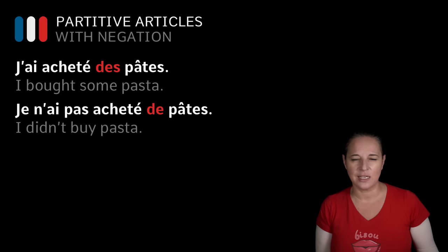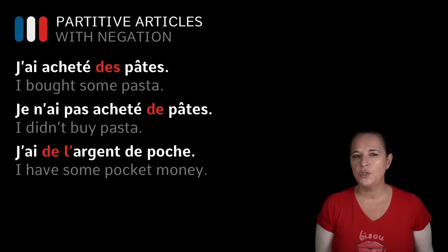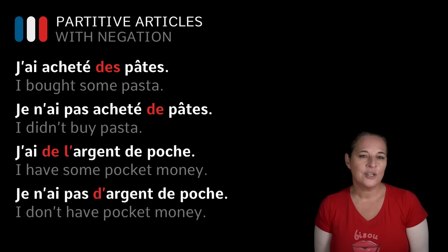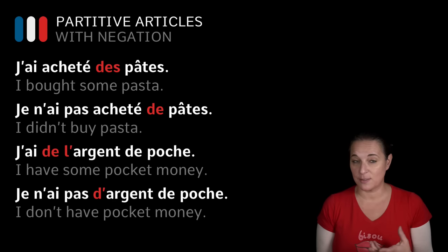What happens when we have DE L' apostrophe? 'J'ai de l'argent de poche' — I have some pocket money. 'Je n'ai pas d'argent de poche.' See what happens? ARGENT still begins with a vowel, so we can't say 'Je n'ai pas DE argent de poche' — we've got to drop the E and use D'. So: 'D'argent de poche' — I don't have pocket money.